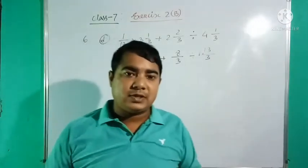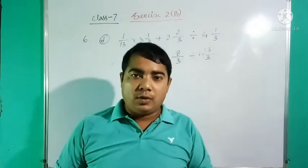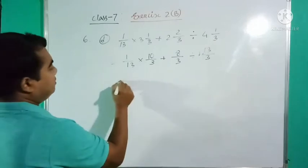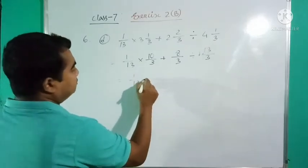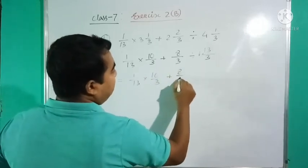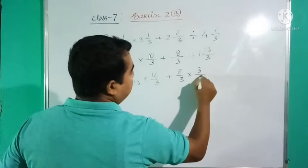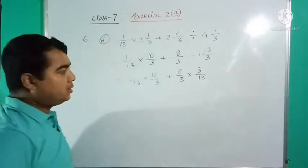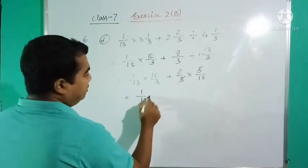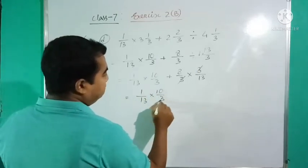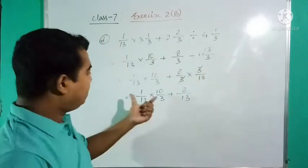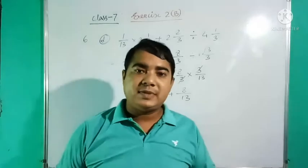1/13 divided by, sorry, multiply. Next plus 8/3, and it is 3/13, then 3 and 3 cancel. Now 1/13 into 10/3 plus 30, and here it was 8.